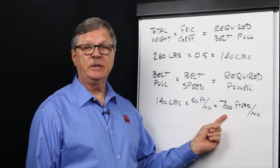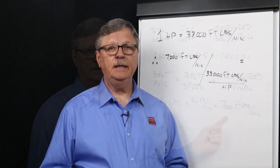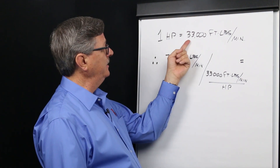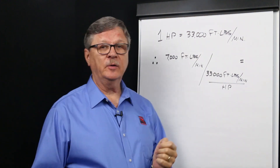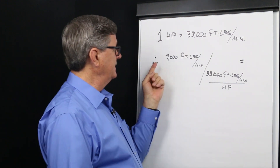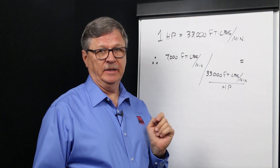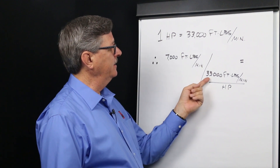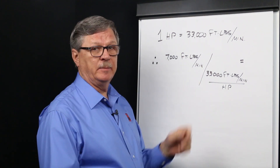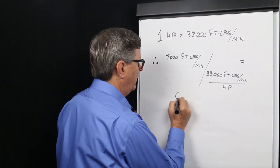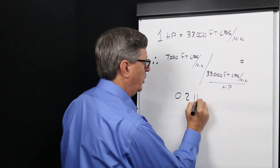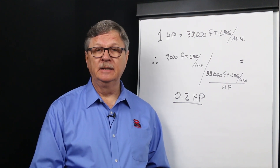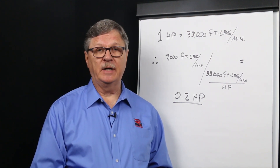We can now convert that to a useful unit. In imperial units, we know that one horsepower equals 33,000 foot-pounds per minute. Therefore, our power requirement of 7,000 foot-pounds per minute can be converted using this equation. 7,000 foot-pounds per minute divided by 33,000 foot-pounds per minute per horsepower equals a power requirement of 0.21 horsepower.